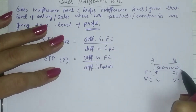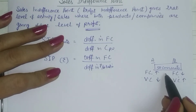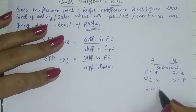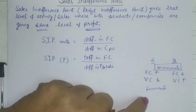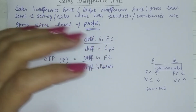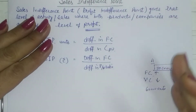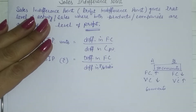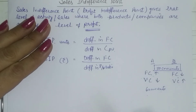Suppose the sales indifference point is at 50,000 units — both options give the same profit level here. If your actual level of activity is above this, say 60,000, you have already covered both fixed costs and are in a profitable position. Every additional sale beyond that point generates profit based on contribution or PV ratio. So when sales are above SIP, you should choose the method giving higher profit — that is, higher PV ratio or higher contribution, meaning lower variable cost.